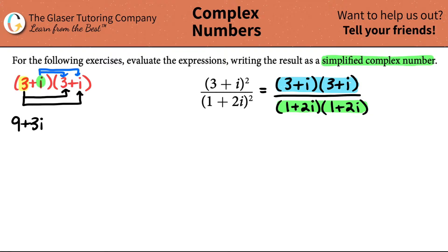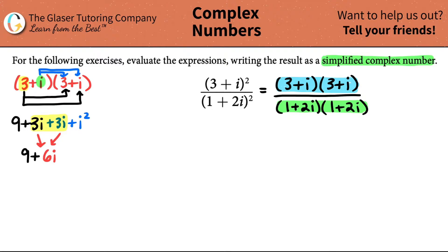So plus 3i. Then i times 3 is a positive 3i, and then i times i. I have two of the same variables - 3i plus 3i is 6i. So I have 9 plus 6i plus i squared.